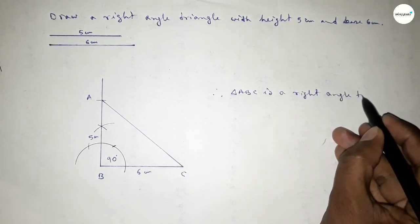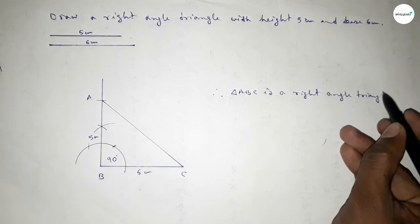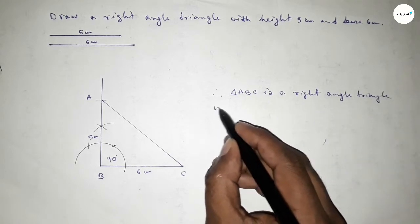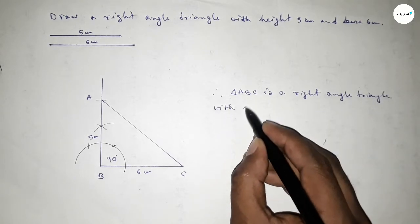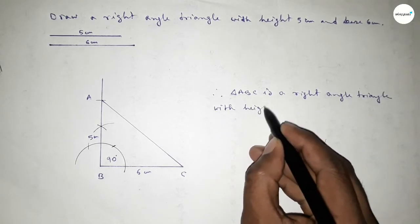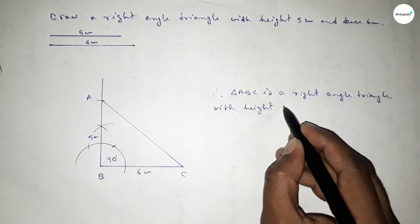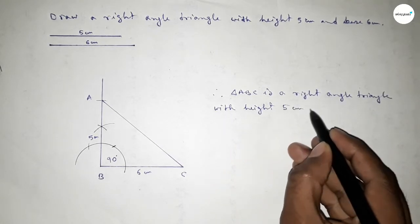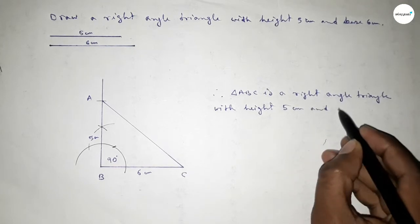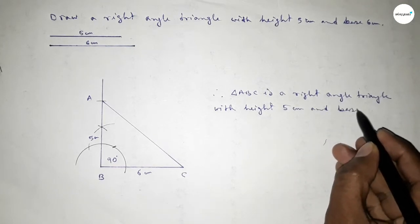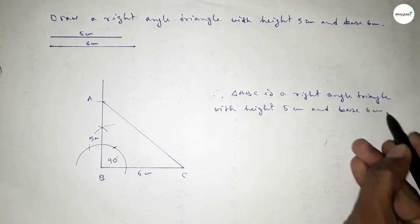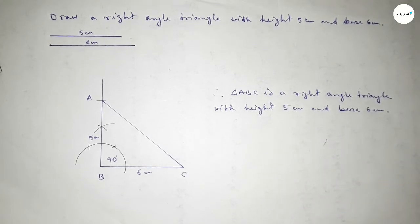Therefore, triangle ABC is a right angle triangle with height equal to 5 centimeters and base equal to 6 centimeters. That's all — thanks for watching. If this video is helpful to you, please share it with your friends.